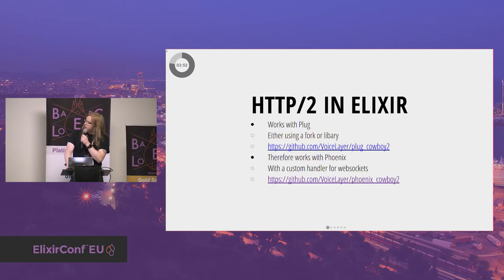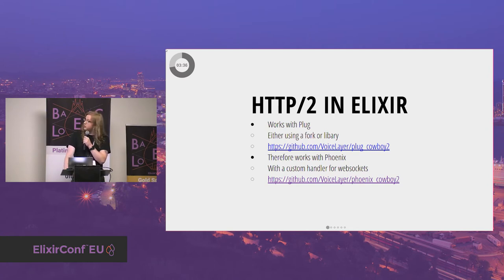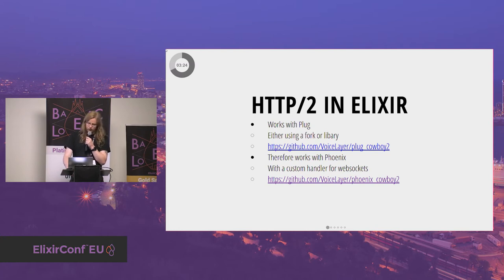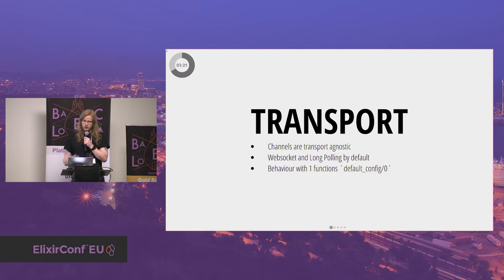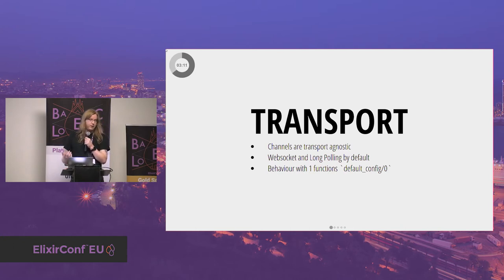In Elixir, with Cowboy2 it works with Plug. There was a fork by Andrew Nesbitt, and I pretty much ripped off his code and moved it into a library that's available on Hex. You can use it with Phoenix and it works. It just has some changes to support the Cowboy2 API. Because it works with that, it also works with Phoenix as long as you use a custom handler specified in your Phoenix config.